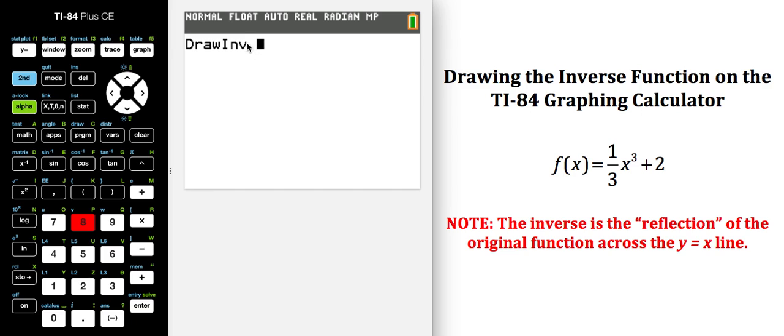It is waiting for you to tell it where you stored that original function. We stored that original function in y sub one, so you're going to need to call up your y vars. You can do that shortcut wise by doing alpha F4.